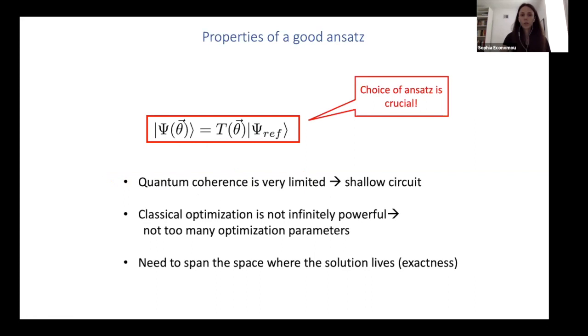And the things you want to take into account is that quantum coherence is very limited. So you want as shallow circuits as possible without sacrificing accuracy too much. Classical optimization is not infinitely powerful. So you don't want to throw too many optimization parameters to your optimizer or unnecessarily many optimization parameters. And of course, you want to span the space where the solution lives.